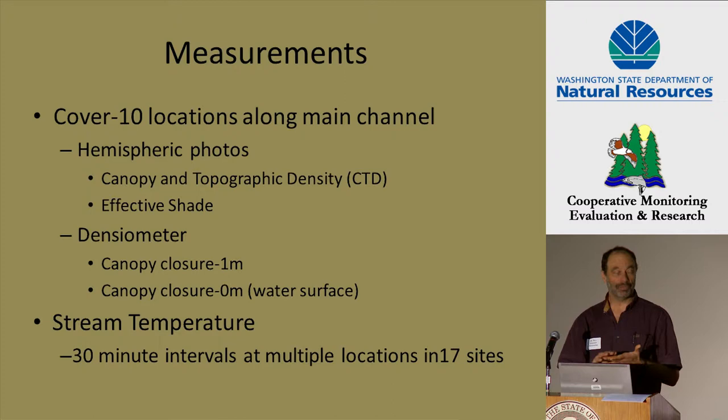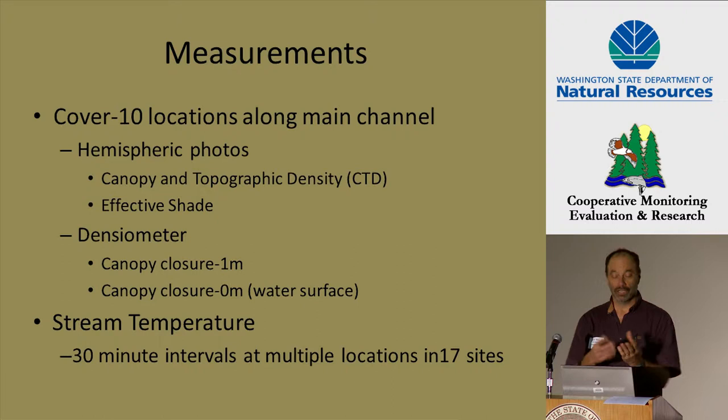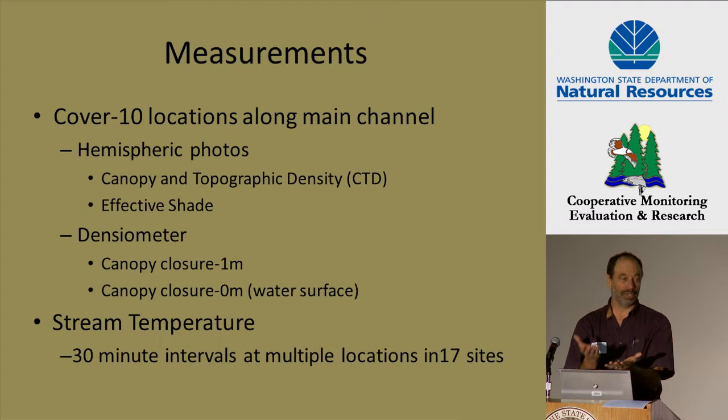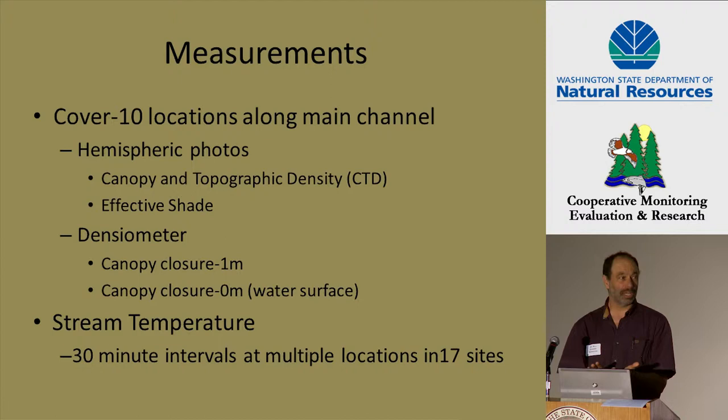So what did we actually measure? For stream cover we did it two different ways. One is we took hemispherical photos at ten locations along the main channel, and from those we calculated two metrics. One was canopy and topographic density — the proportion of the hemisphere obscured by canopy, trees, or topography. Effective shade looks at that same hemispherical photo but focuses on the solar path for a particular time of year, in this case summertime, and the proportion of solar energy blocked along that solar path.